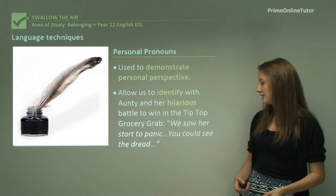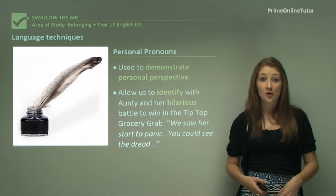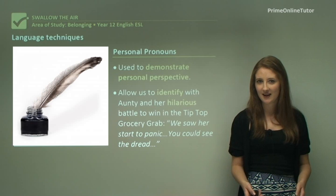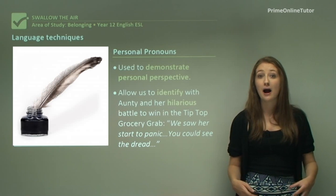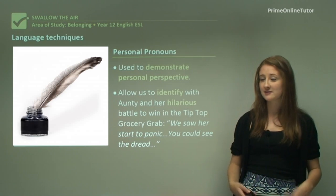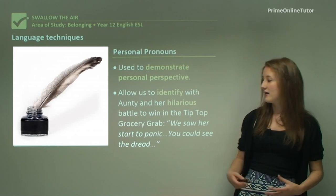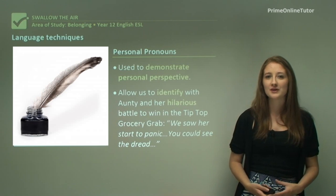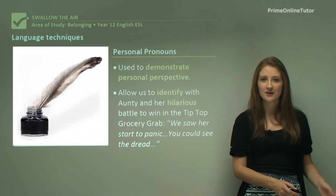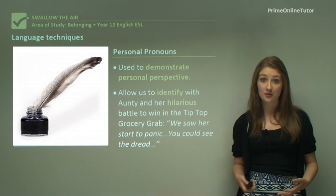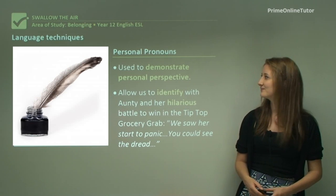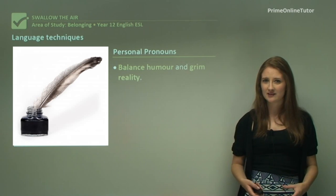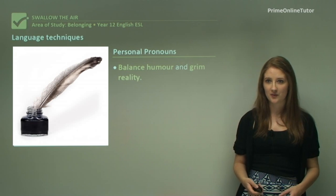'We saw her start to panic, you could see the dread.' The pronouns 'we' and 'you' are ways of being very inclusive, really drawing the audience in and making them feel like they're part of this funny, action-packed scene where the auntie is running around grabbing groceries. This creates a contrast from that poetic style — that colloquial tone coming through these personal pronouns. It's also a way of balancing humour against the really grim reality which the author is dealing with through her work.